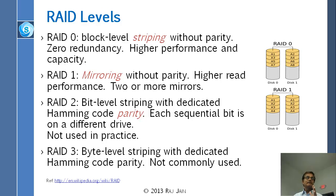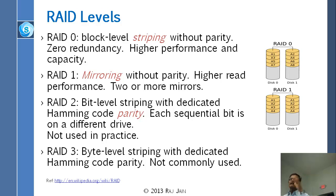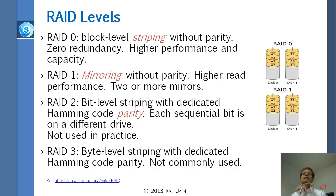RAID 1 is mirroring. Mirroring means you keep copying — everything you write on disk 1, you also write on disk 2: block 1 here and block 1 there, block 2 here and block 2 there. Write performance doesn't go up, but read performance does go up because you can read in parallel. You also gain reliability and fault tolerance — if one disk fails, you have a copy. That is RAID 1: mirroring.